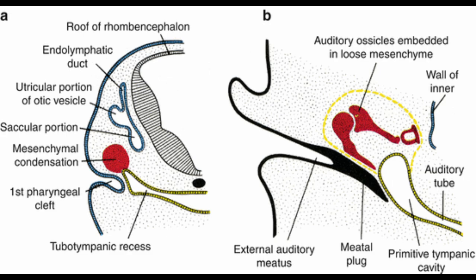The external auditory canal develops from the dorsal portion of the 1st pharyngeal groove — the ectodermal invagination between the 1st and 2nd pharyngeal arches. This ectodermal invagination extends towards the developing middle ear structures. By the 18th week, the external auditory canal is completely patent and expands to produce its typical morphology.